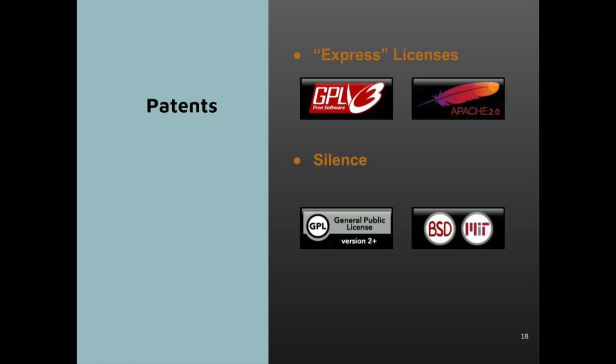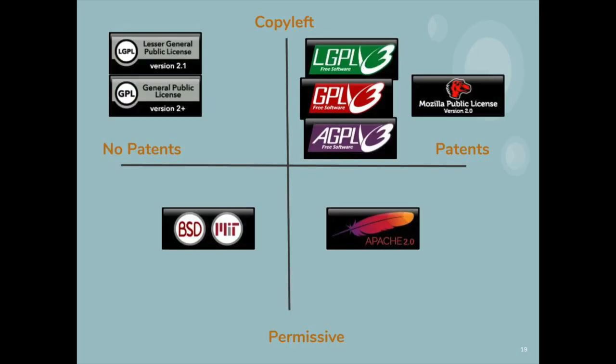Whether you intend to seek patent protection is a significant element to your license choice. In sum, if you have patents to protect, you probably want to avoid older licenses without express grants like BSD, MIT, or GPL-2. This matrix shows you where the most common open-source licenses fall on the two central questions of license choice: copyleft versus permissive and patent grant versus none. For permissive licenses, there is really only one choice for each patent position. The BSD and MIT licenses are grouped together because there is no effective difference between them. The Apache license, however, contains an express patent grant.